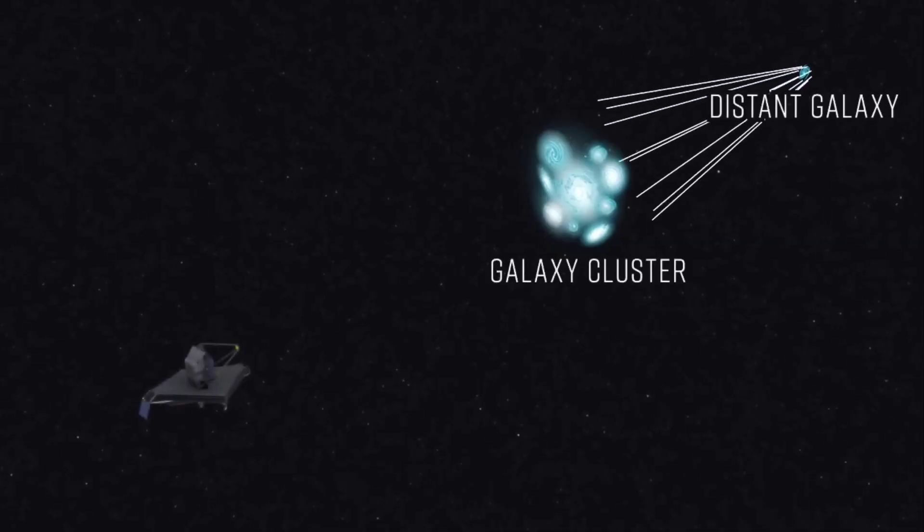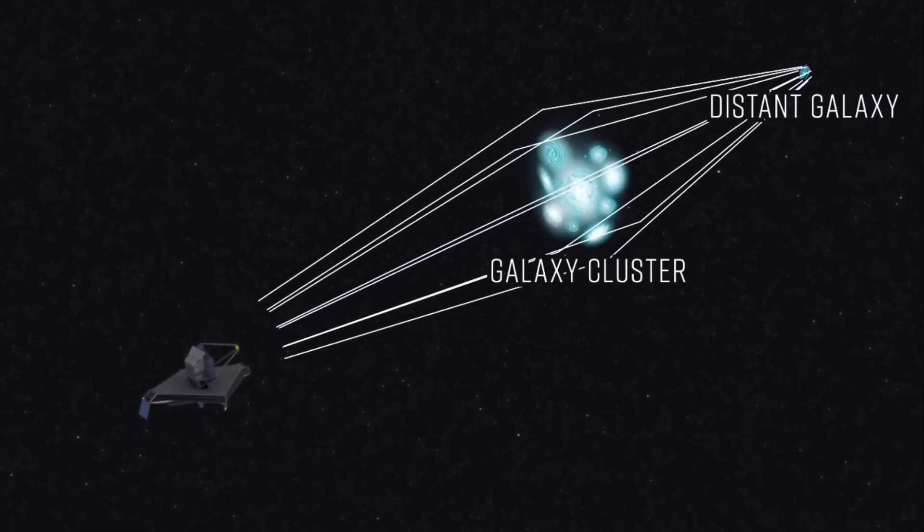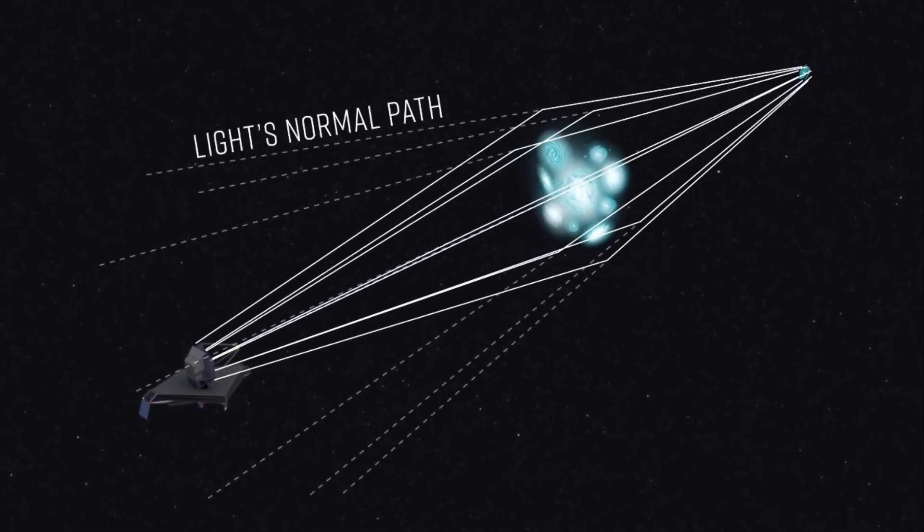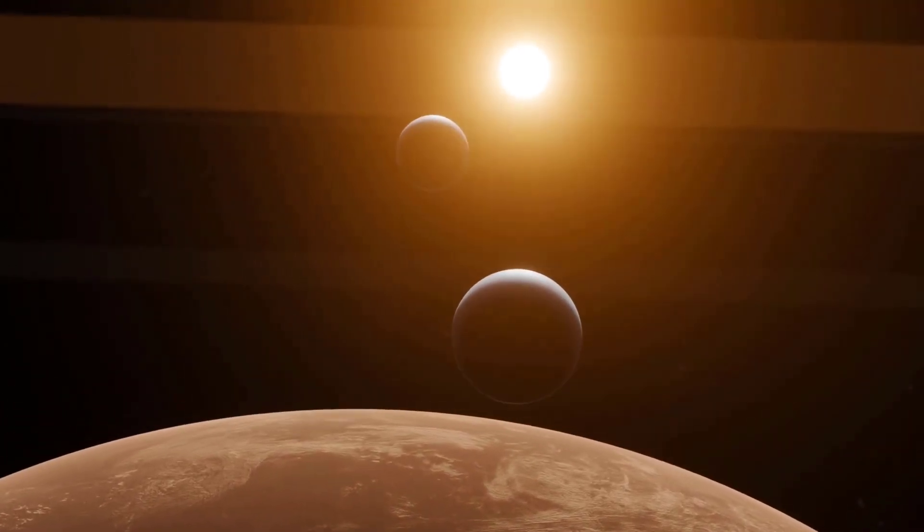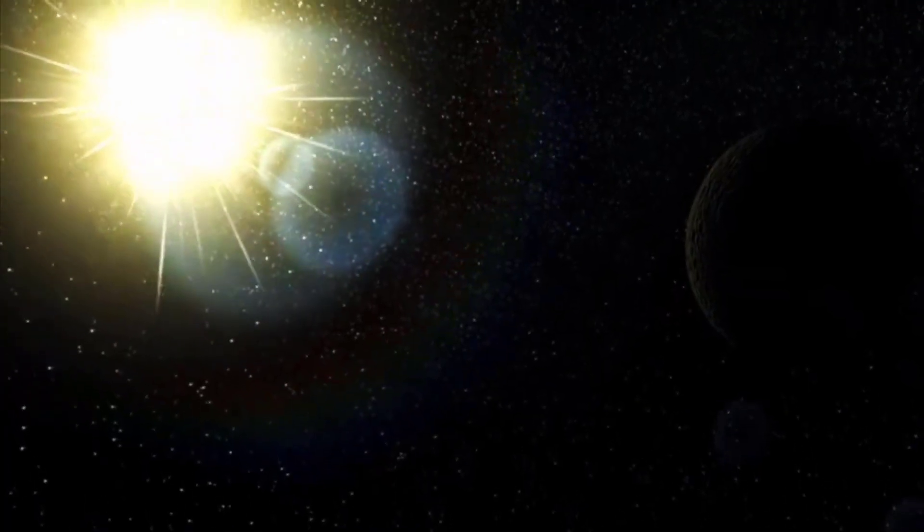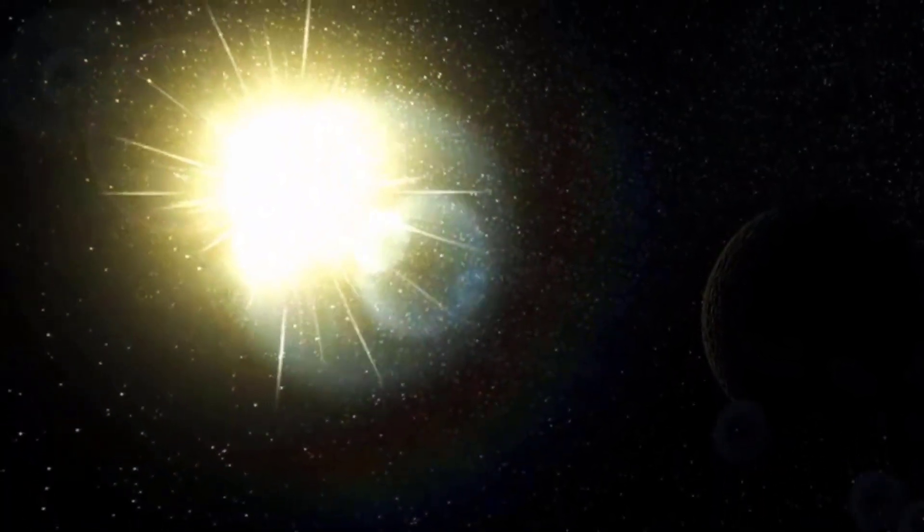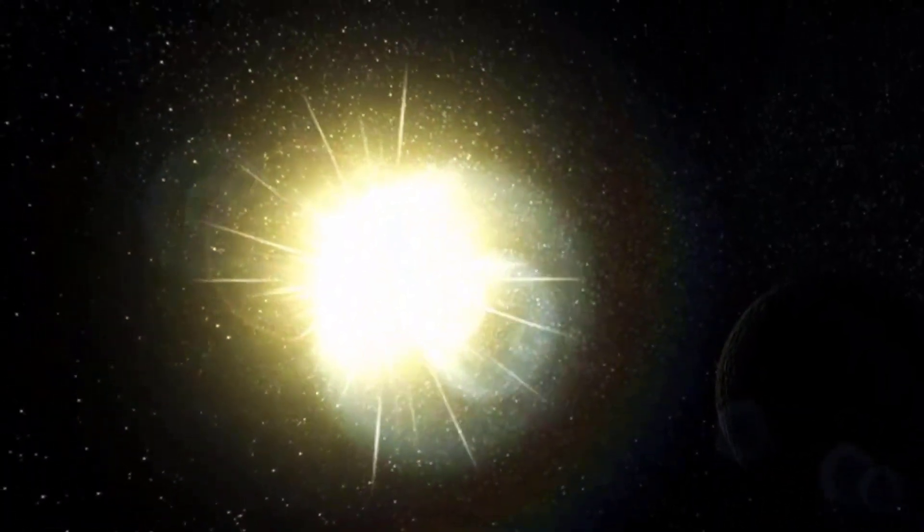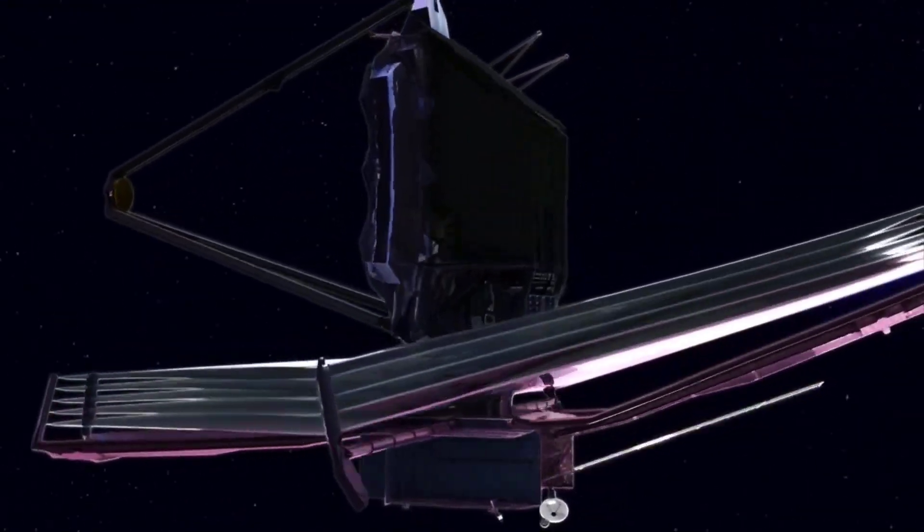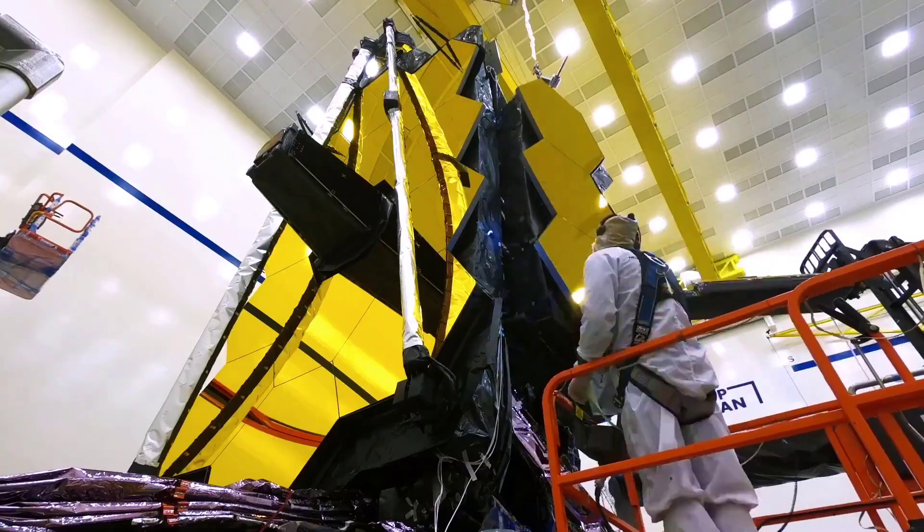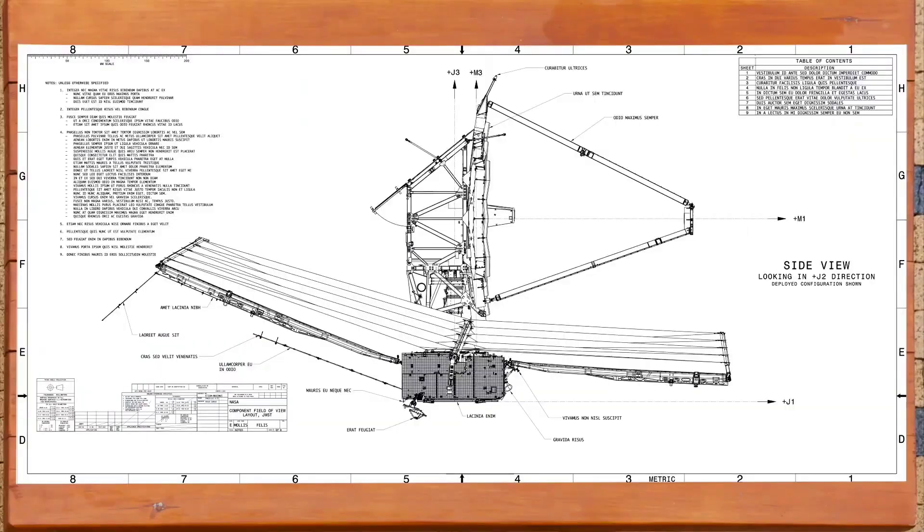The JWST is widely regarded as the most advanced space observatory ever constructed. Webb will investigate the enigmatic architecture and origins of our cosmos, as well as our place in it, as well as solve mysteries that exist inside our solar system and look beyond to more distant worlds that orbit other stars. Webb is a multinational effort that is being led by NASA in collaboration with the European Space Agency and the Canadian Space Agency.